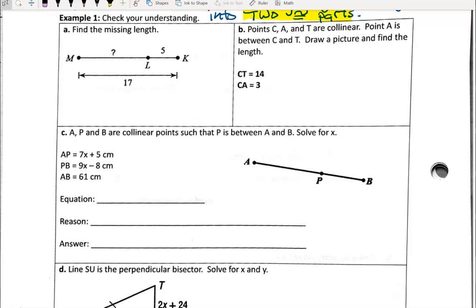Let's start with B. I'm going to let you go back and do A. Points C, A, and T are collinear. So I'm going to draw these three points. Point A is between C and T, so A is going to go somewhere in between here. My drawing may not be to scale.